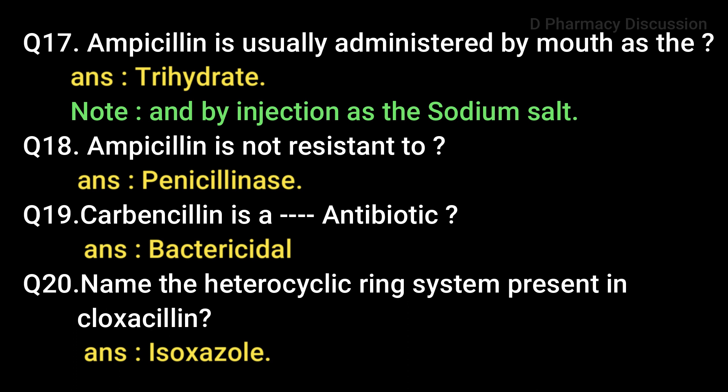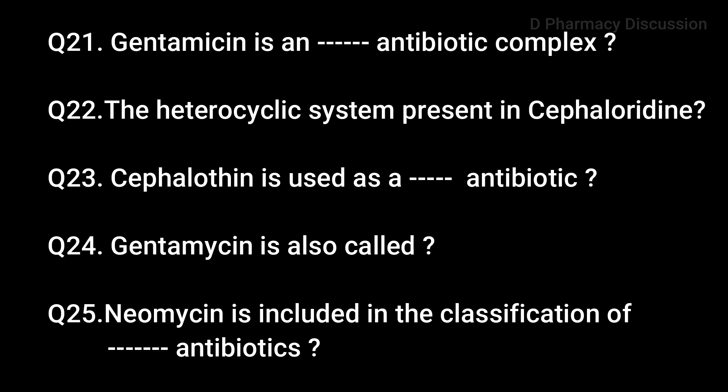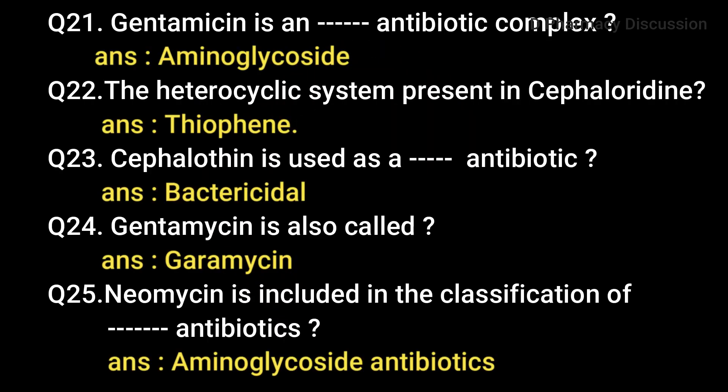Question 20: Name the heterocyclic ring system present in cloxacillin — answer: isoxazole. Ampicillin sodium is an aminoglycoside antibiotic complex. Question 22: The heterocyclic system present in cephaloridine is thiophene.